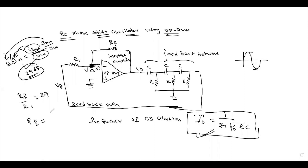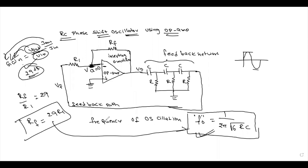The second condition is that the total phase shift around the loop must be either 360 degrees or 0 degrees, satisfying the Barkhausen criterion for sustained oscillations.